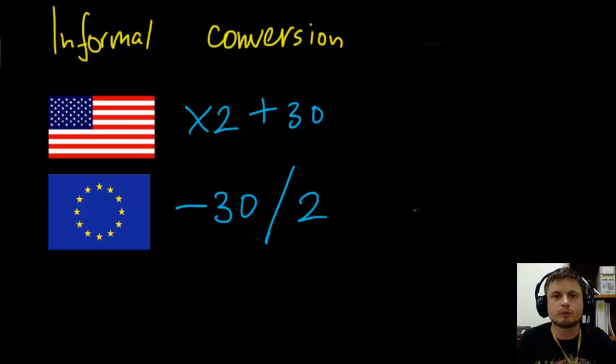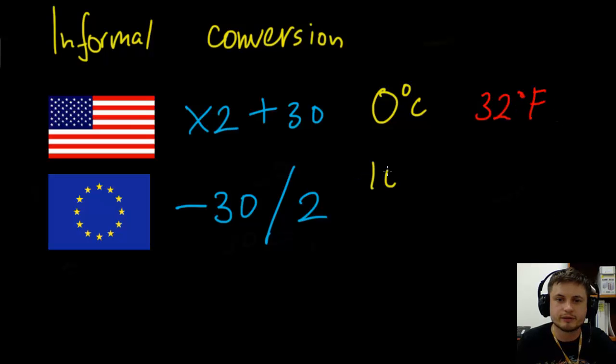Now there's actually another way to remember the conversion and that's by remembering some important anchor points. For example, 0 degrees Celsius is actually the same as 32 degrees Fahrenheit and 10 degrees Celsius is the same as 50 degrees Fahrenheit. If you remember these two anchor points, you can actually figure out what the temperature is and very accurately as well.